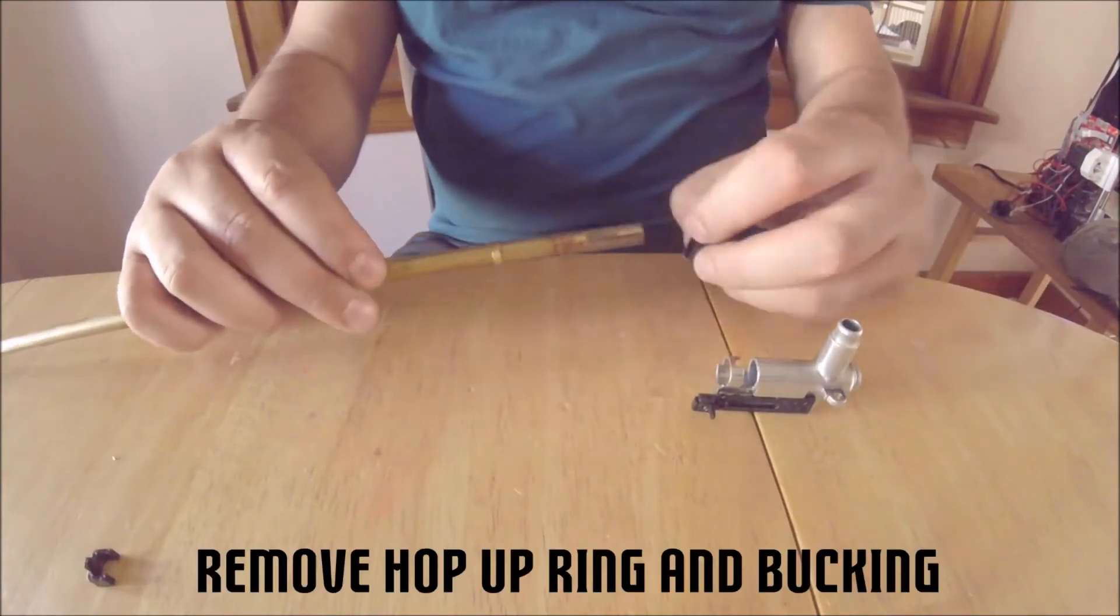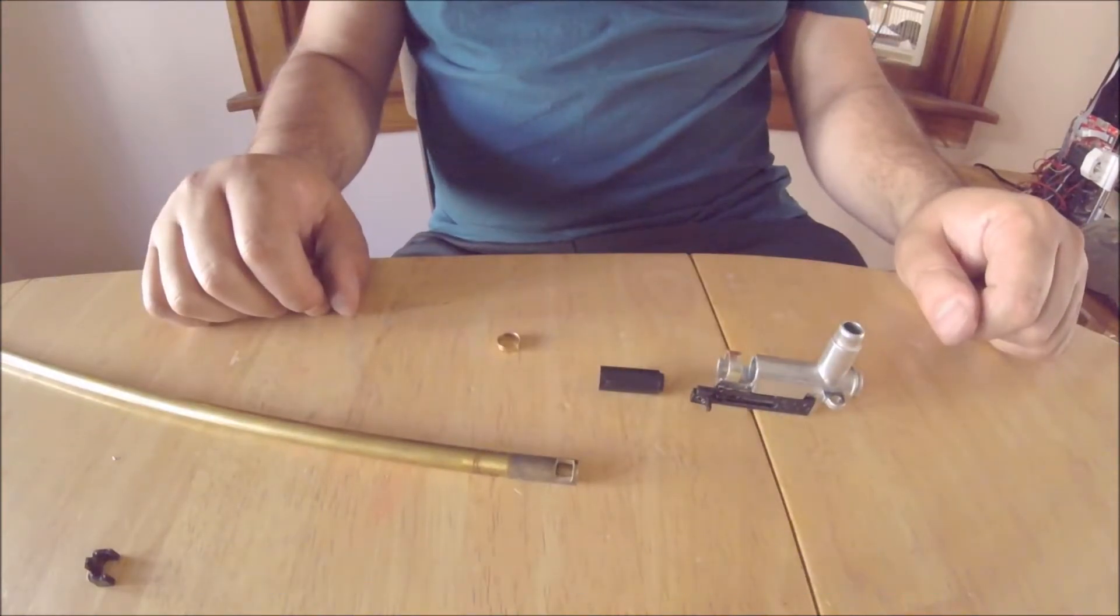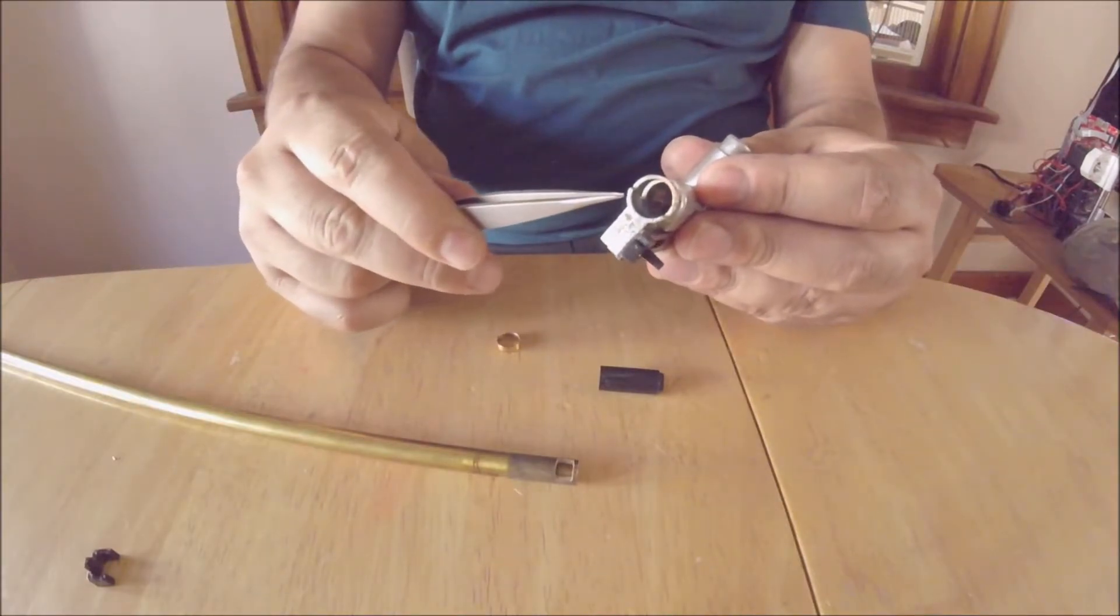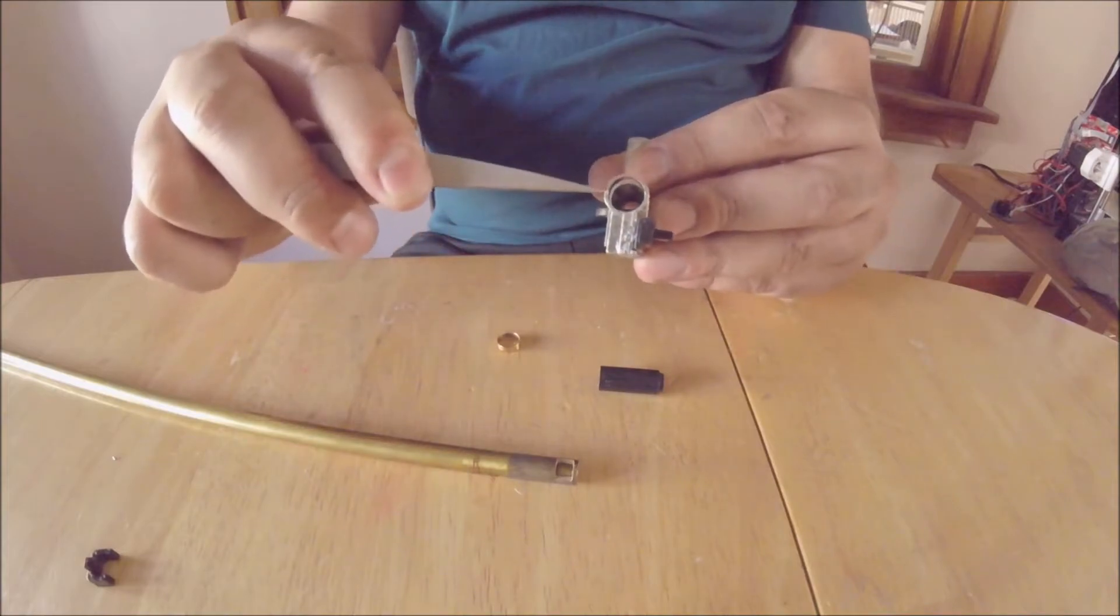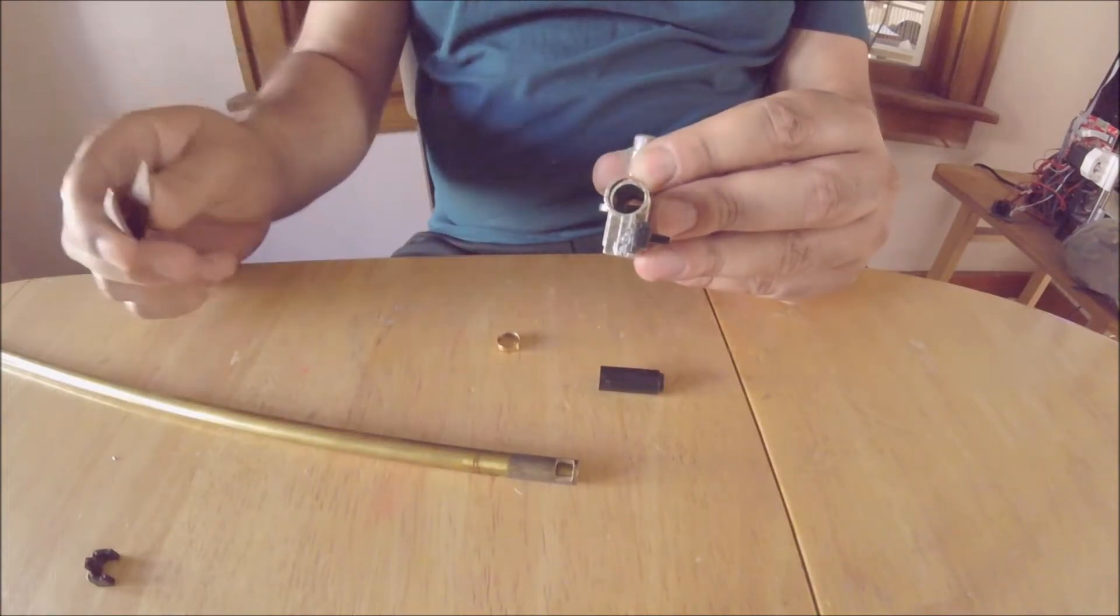Now we can remove the hop-up ring and bucking. A quick note is to watch for the bucking nub inside the hop unit. This is what the hop arm uses to press down on the hop bucking to create backspin on the BB.